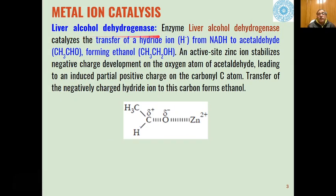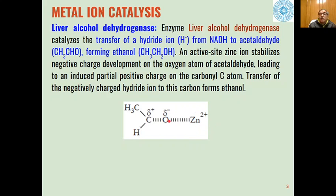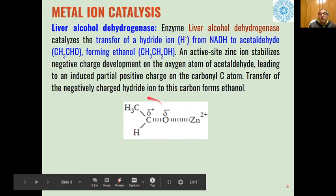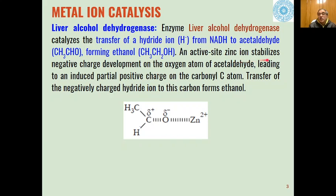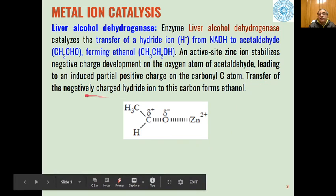For example, the enzyme liver alcohol dehydrogenase catalyzes the transfer of a hydride ion from NADH to acetaldehyde to form ethanol. Because the oxygen of acetaldehyde is electronegative, the metal ion coordinates to this oxygen, making the carbon more electrophilic and more prone to hydride attack, reducing the carbonyl to an alcohol. The active-site zinc ion stabilizes the negative charge developing on the oxygen of acetaldehyde and facilitates transfer of the negatively charged hydride to the carbon to form ethanol.